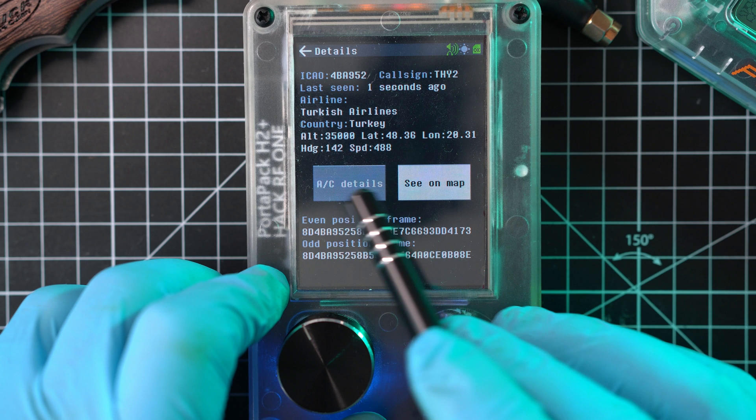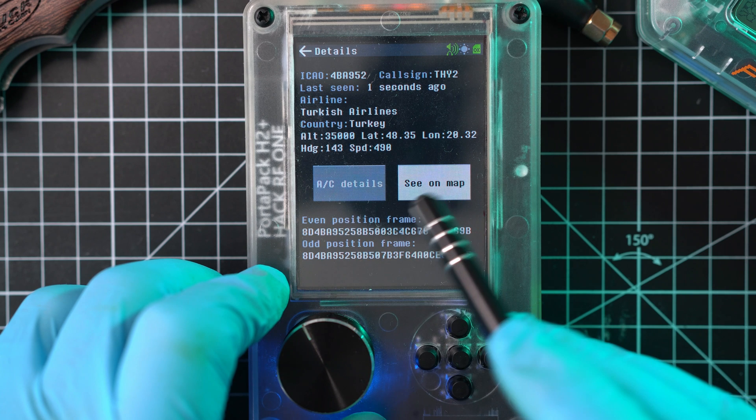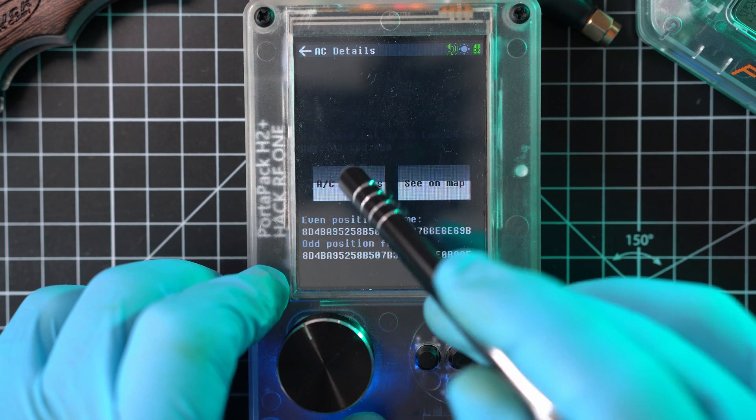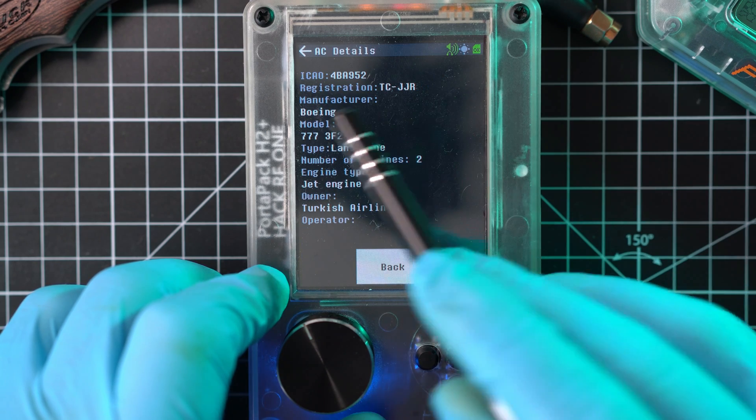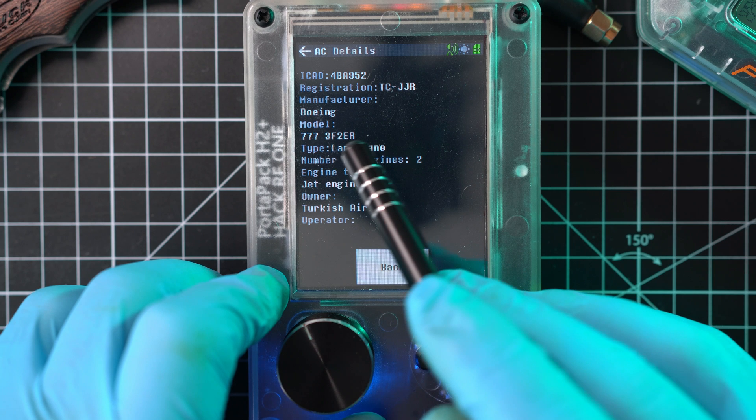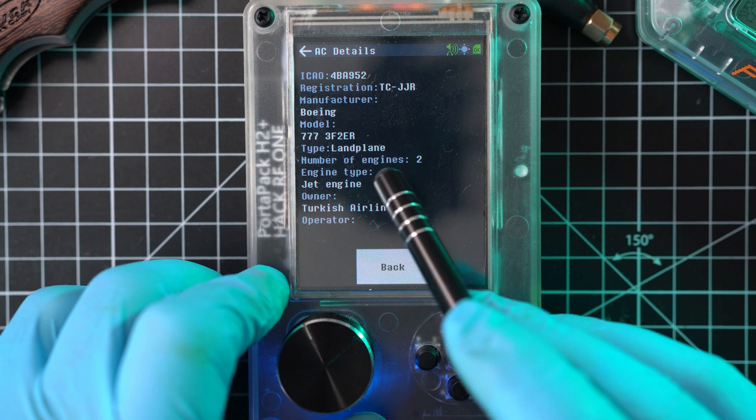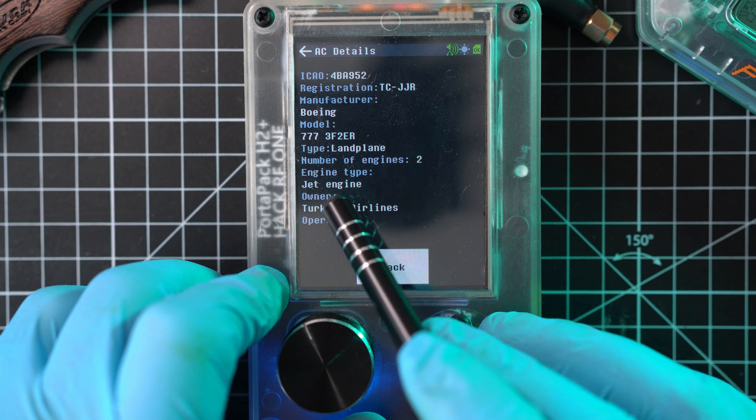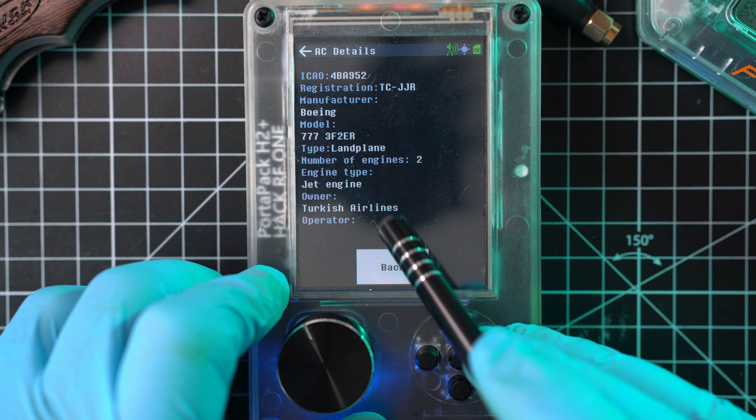You can see air control details and actual position on the map. You can see ICAO number, radio, manufacturer is Boeing, model is 737, even number and type of engines. Owner and operator of the plane. Pretty cool.